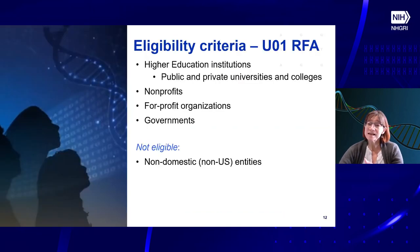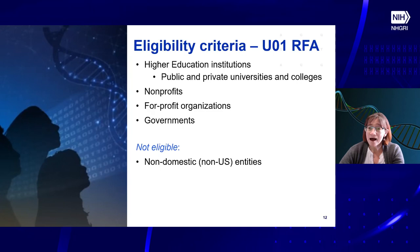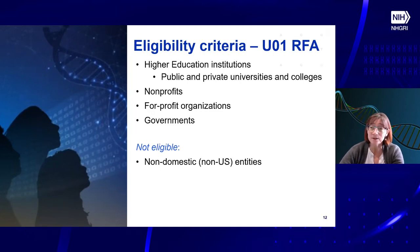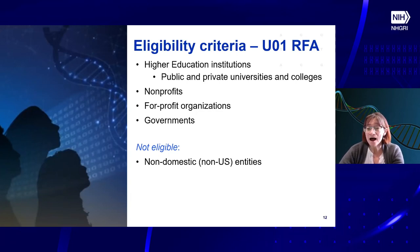As far as the eligibility criteria for applying to the U01 RFA, it is largely unlimited — higher education institutions, nonprofits, for-profits, small governments, and small businesses can all apply. What is ineligible are non-domestic or non-US entities.